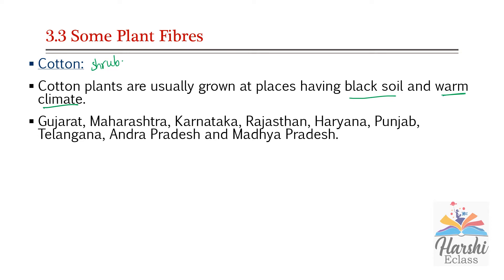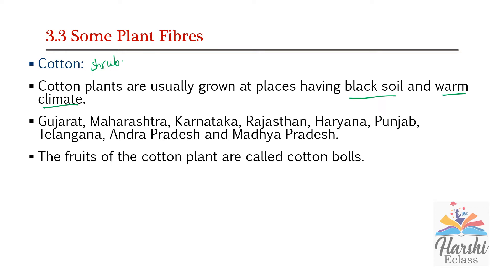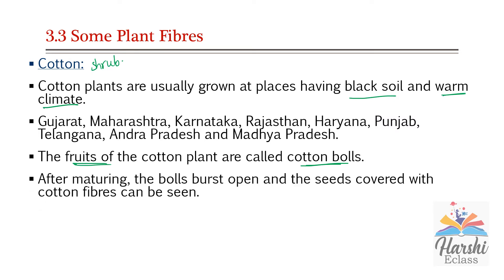The cotton plant has yellowish flowers. After maturing, those flowers convert into green-colored cotton bolls. The fruits of the cotton plant are called cotton bolls. After maturing, these cotton bolls burst and open so that we can see the seeds covered with cotton fibers, indicating the crop is ready to pick. It looks like a field covered with snow.